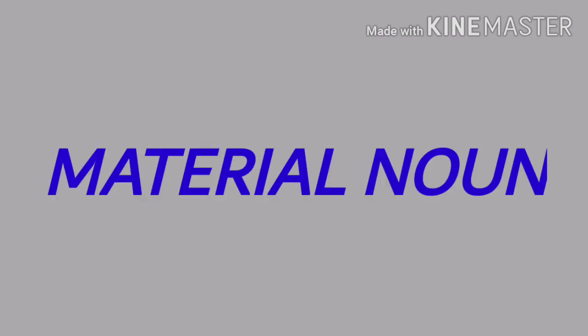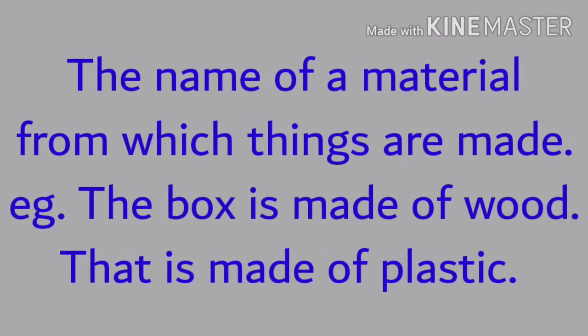Last in the list is the Material Noun. Material noun means the name of a material from which things are made. For example, the box is made of wood — wood is the material used to make the box. Another example: that is made of plastic — plastic is the material used to make that.